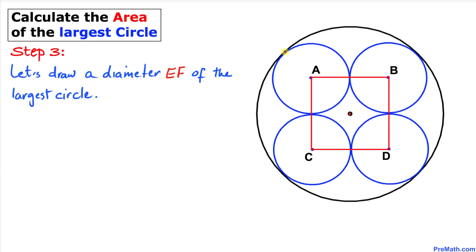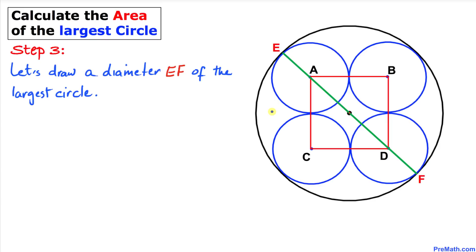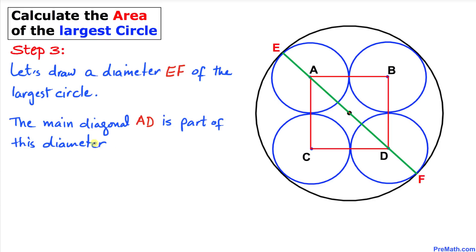For our next step, let's call this point E and this tangent point F, and connect points E and F. This segment EF becomes the diameter of the largest circle. Here's our much nicer looking diagram. We also observe that the main diagonal AD of square ABDC is part of this diameter EF.